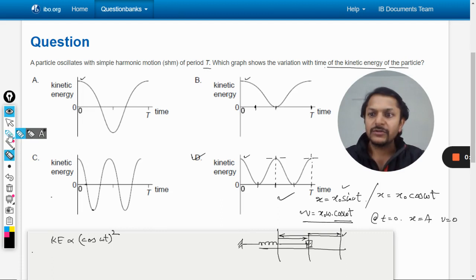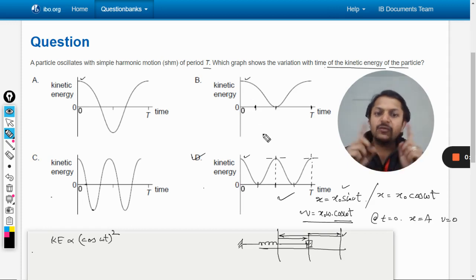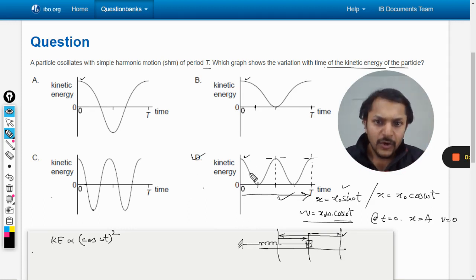Otherwise also you can say that the kinetic energy frequency is double. You can see if in one oscillation from zero to T, this is one oscillation from displacement point of view, but from kinetic energy point of view these are two different oscillations. For energies the frequency is double. And the energy is never negative, so by using that argument also we reach the same conclusion that the answer is D.